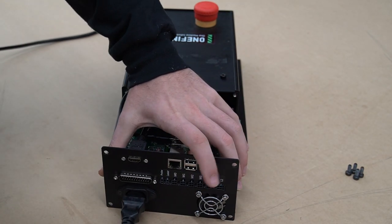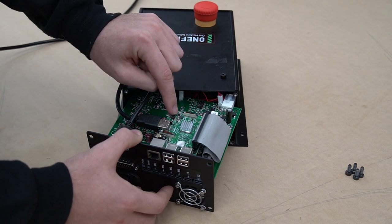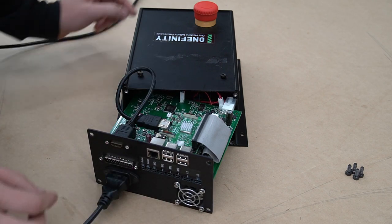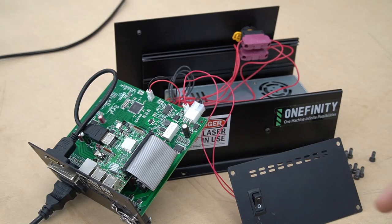Now that we've unplugged our controller, we're going to plug it back in and check the two LED indicators on the Raspberry Pi to make sure that it is functioning correctly. We can see that it is not lit up, so we know that we are not getting power.